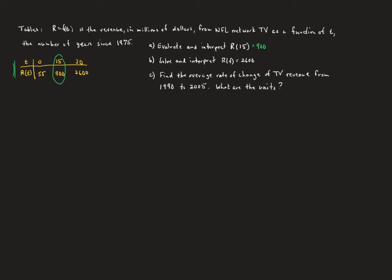Going the other way in part B: solve and interpret R of T equals 2600. Looking in the row where R of T is 2600, the value of T that generates that is 30. So T equals 30. The interpretation for part A is that 15 years after 1975 — that is, in 1990 — the TV revenue was 900 million dollars.